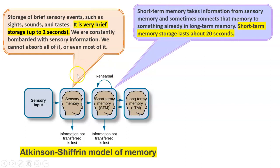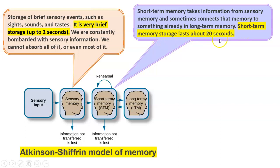In short-term memory, information is taken from sensory memory and sometimes connected with something already in long-term memory — that is where information is processed and compared with previous knowledge. If the information is relevant, it goes to long-term memory. However, there is still a possibility of loss if not properly processed. Repeated use of information is required. The storage duration in short-term memory is about 20 seconds, within which the information must be processed, compared, and sent to long-term memory.